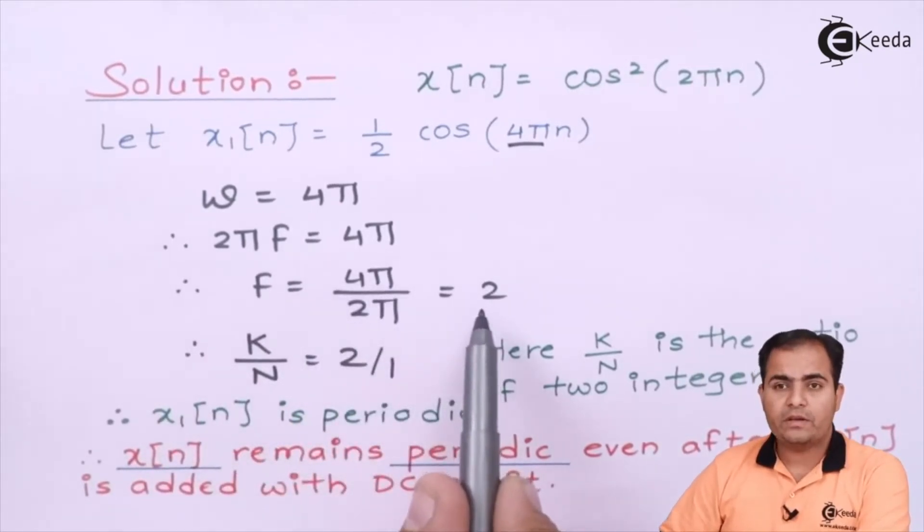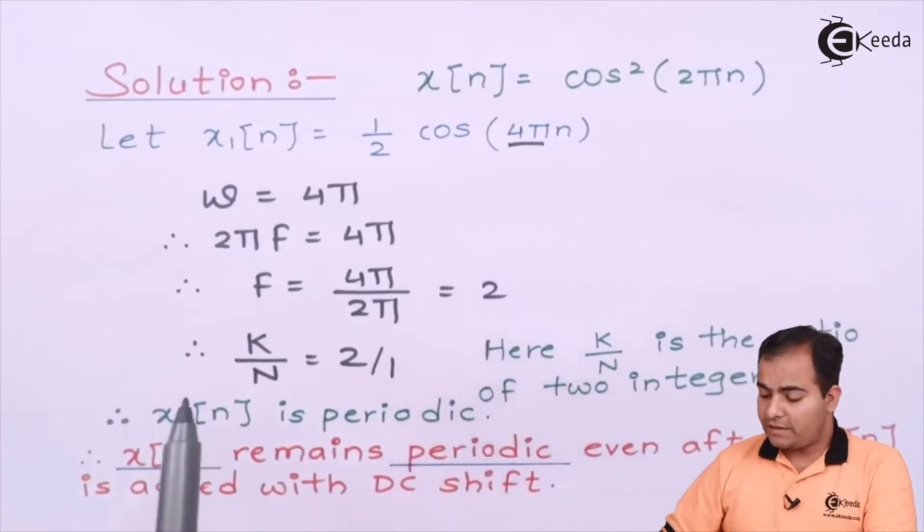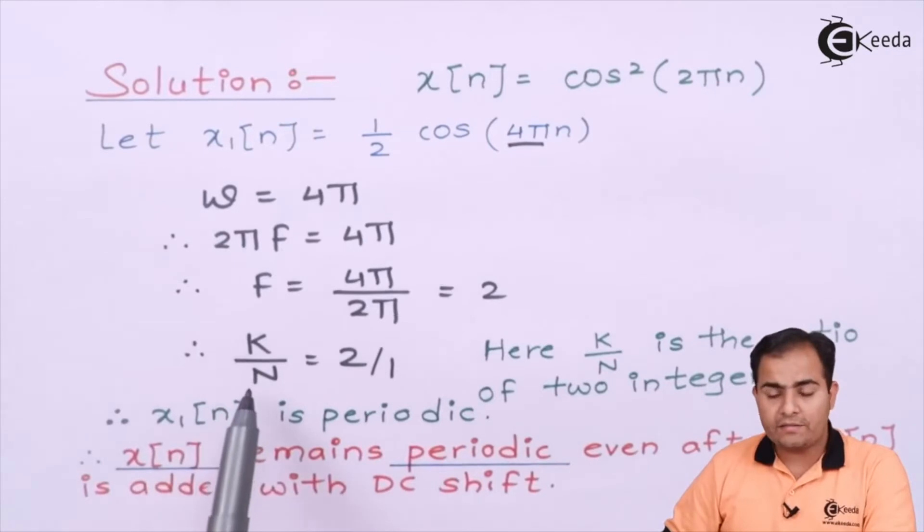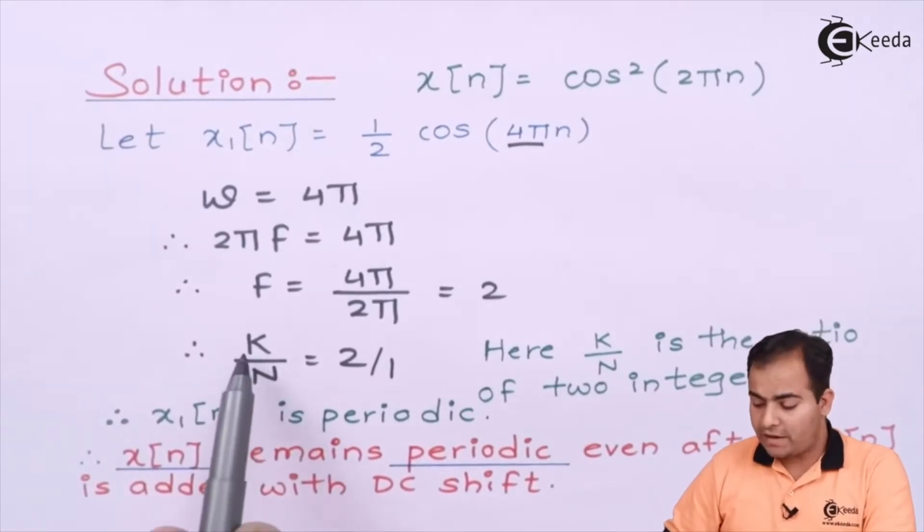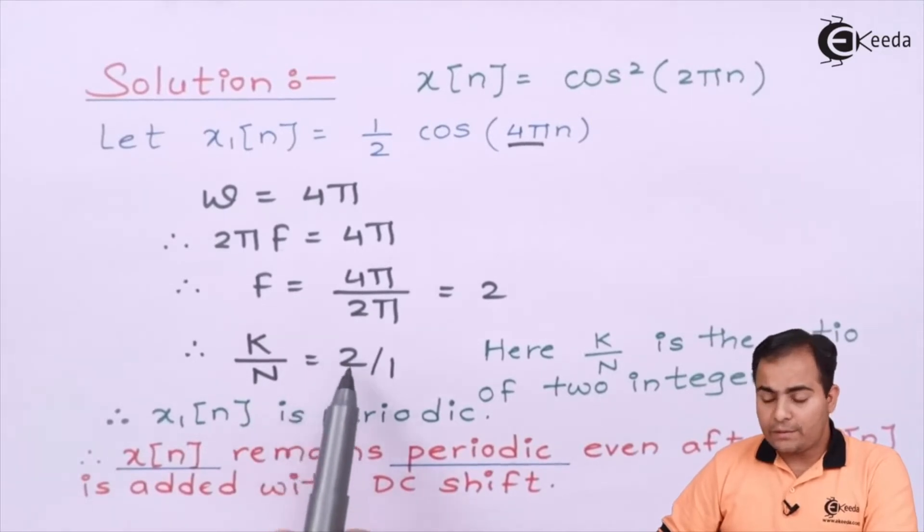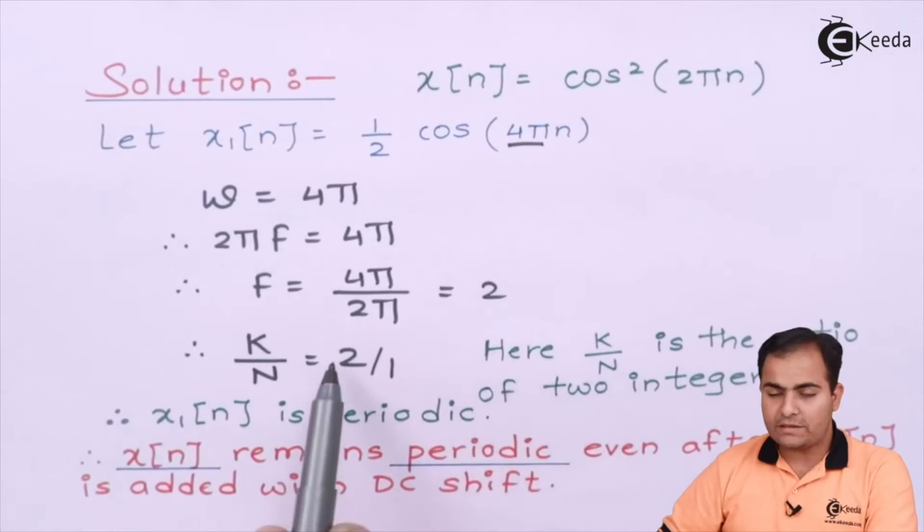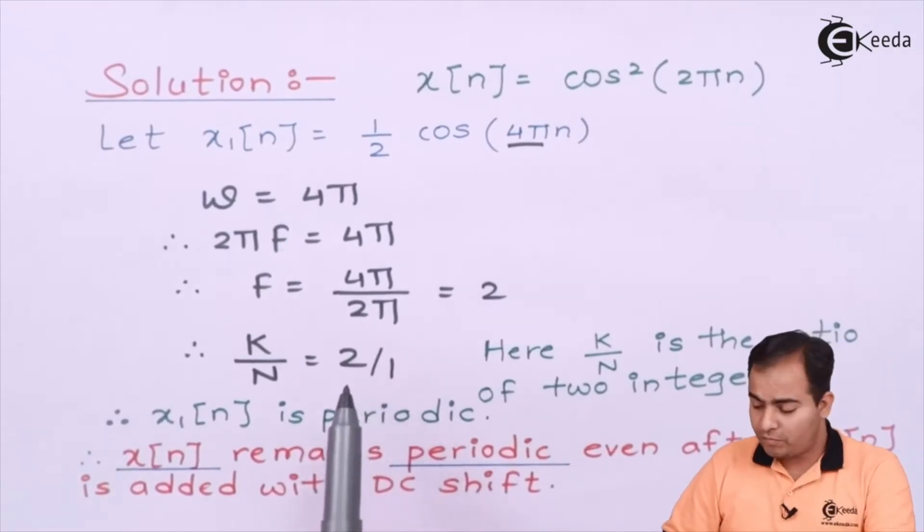In the discrete part, this frequency is represented by k/n, where n is the period and k is the number of cycles. Here the value is 2, so I can write this 2 as 2/1.